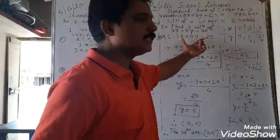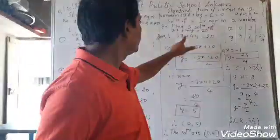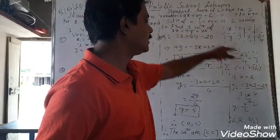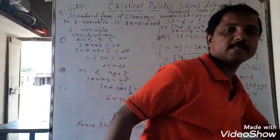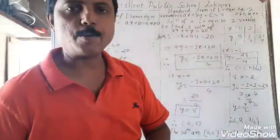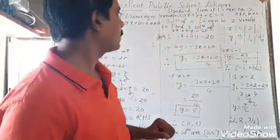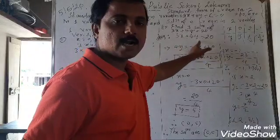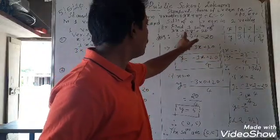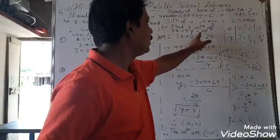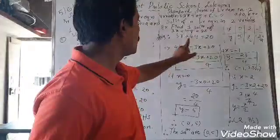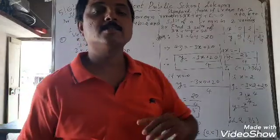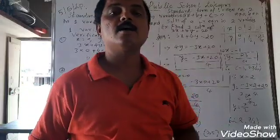Look at this. Here, 3x plus 4y is equal to 20. It is a linear equation in two variables. Here, x and y are two variables of degree 1 each, whereas 3, 4, and 20 are the constants.